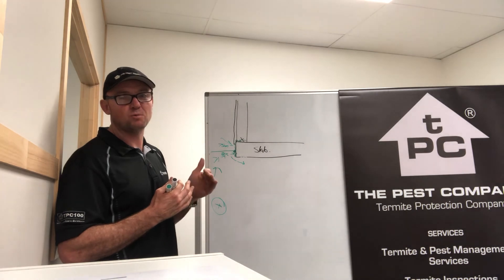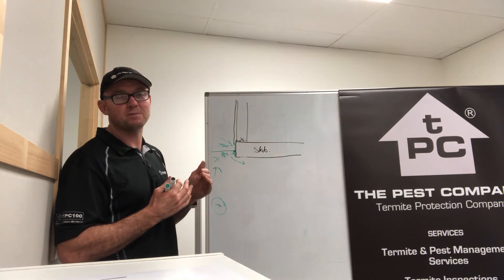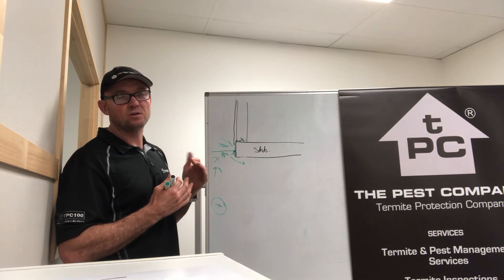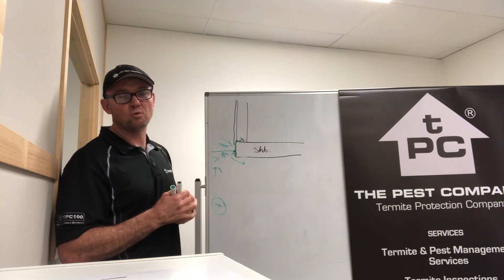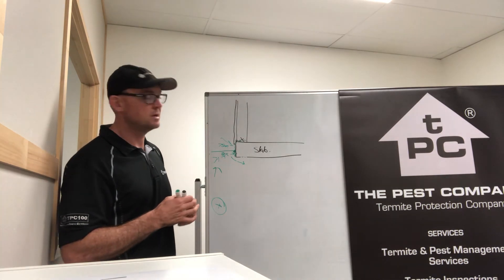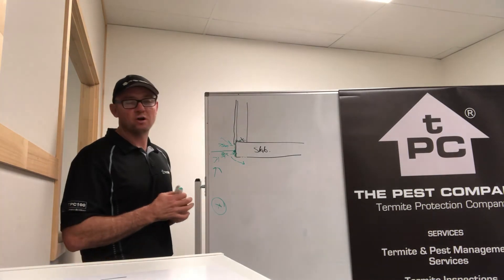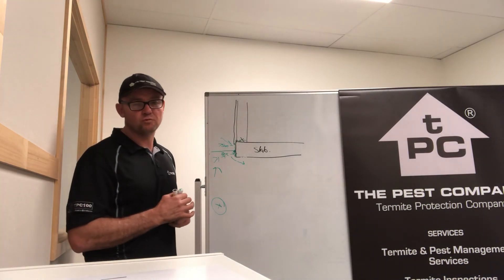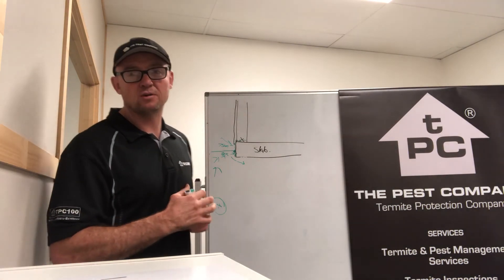You can see termites tracking up the slab. For more advice, call the Pest Company on 1300 55 2234. Thank you.